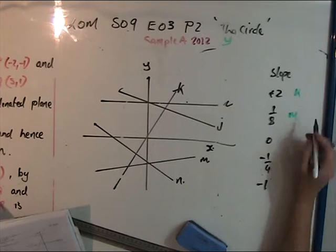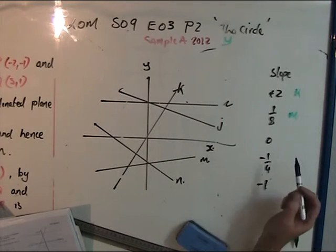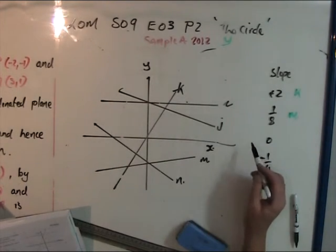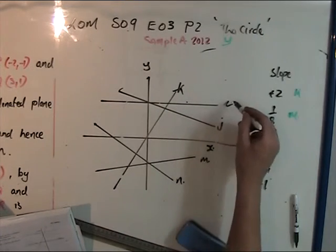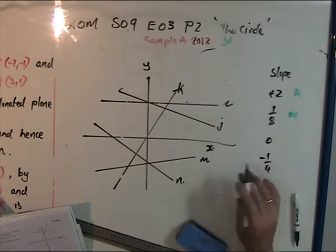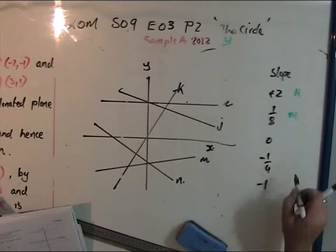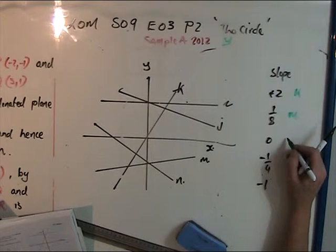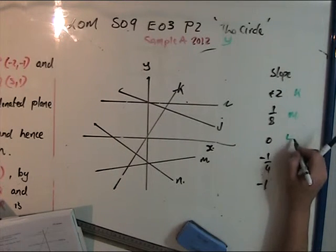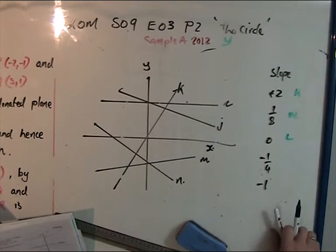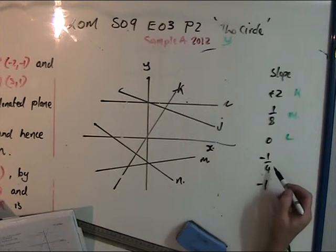The next highest slope is M with slope 1/8. Something with zero slope - anything parallel to the x-axis is not going up or down. That's line L, parallel to the x-axis.